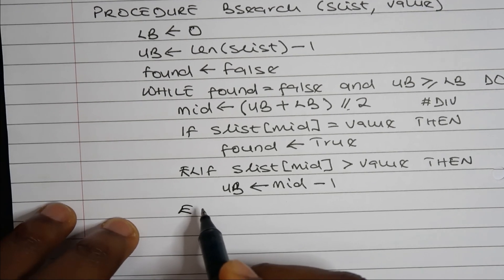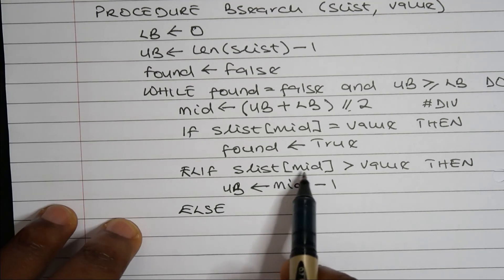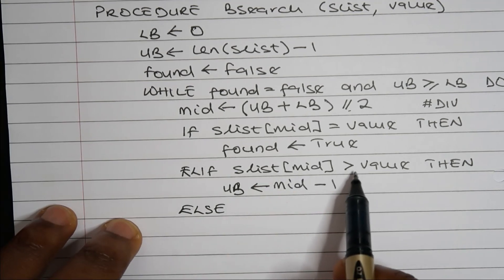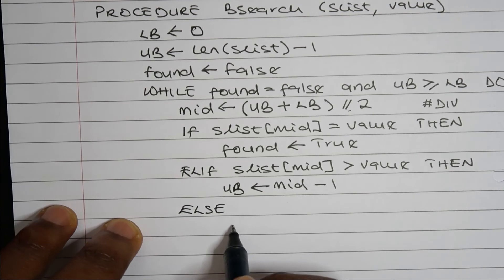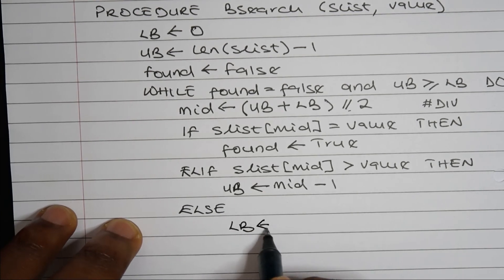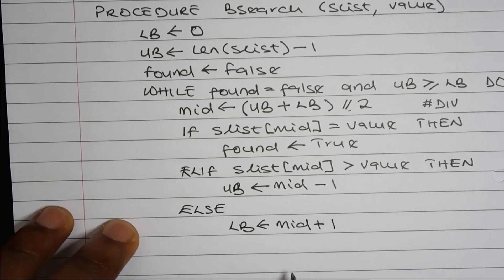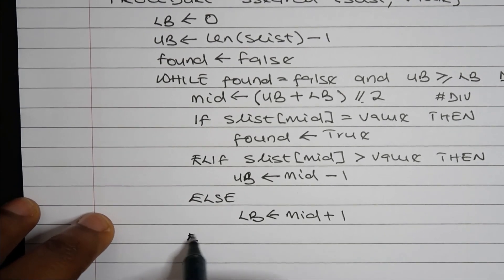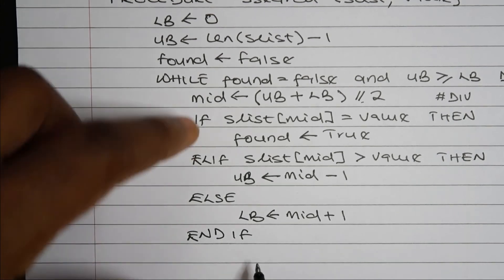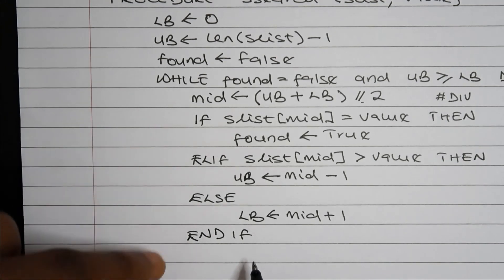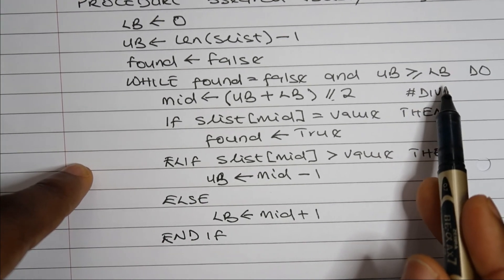Otherwise, we're now saying that if the value in the midpoint in our list is lower than the value we're looking for, then it's our lower bound we're going to change now. We're going to say our lower bound will become midpoint plus one. At this point, we can end if and then go back to the iteration and this will carry on while found is false and upper bound is greater than lower bound.